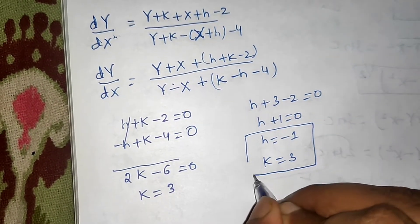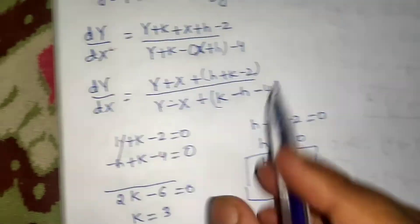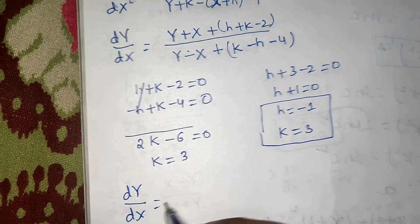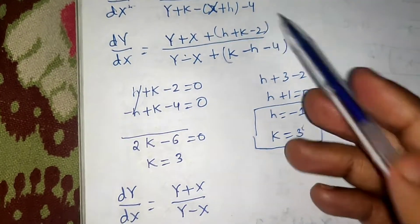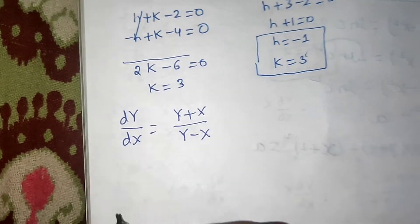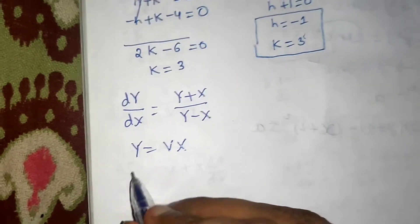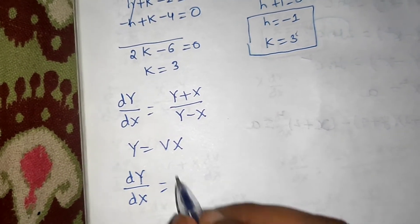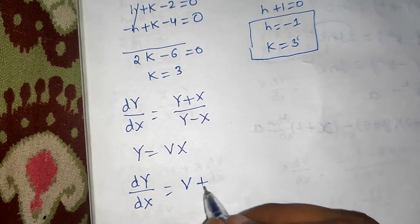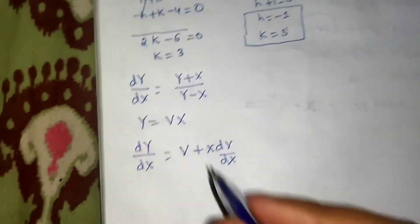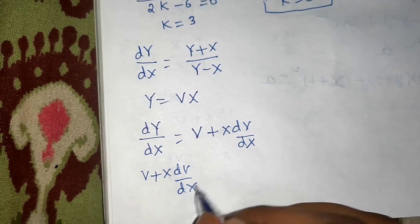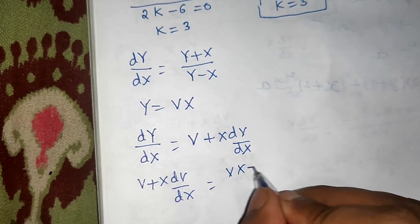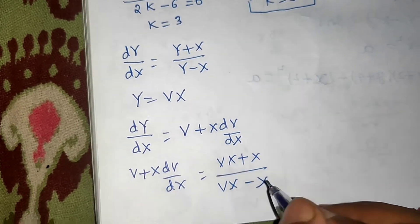Keep h = −1 and k = 3 for later. Substituting these values, the constant brackets become zero, and the equation reduces to dY/dX = (Y + X) / (Y − X), which is homogeneous. For homogeneous equations, we substitute y = vX. Differentiating with respect to X: dY/dX = v + X·dv/dX. Substituting, the left side is v + X·dv/dX and the right side becomes (vX + X) / (vX − X).